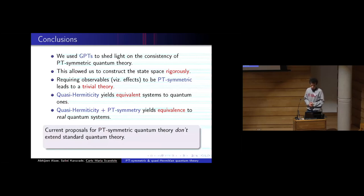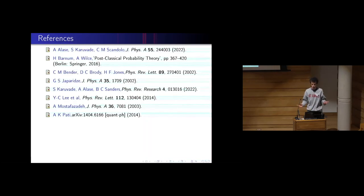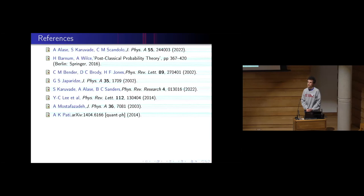Particularly, can we use device-independent principles — which are available in the literature — to help single out quantum assemblages? And what does the answer teach us about EPR scenarios? We define multi-partite quantum assemblages with multiple Alices each having inputs and outputs, and one Bob with a Hilbert space. A quantum realization of the assemblage assigns these subnormalized states a quantum origin.